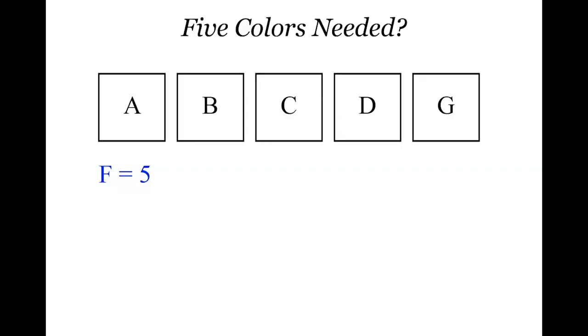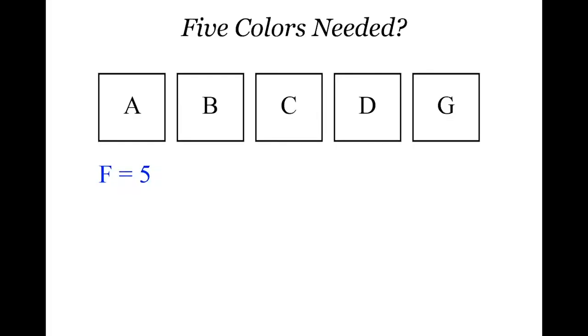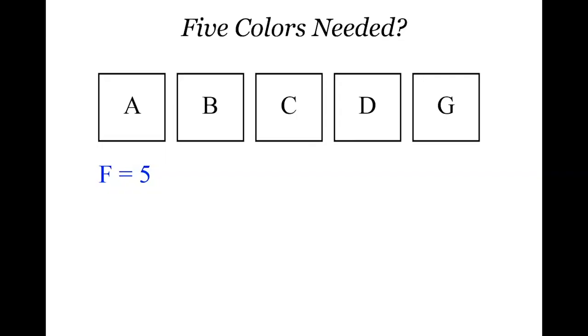I want to look at the vertices and think about how many there could be. We know that at each vertex you need to have at least three different faces. The total number of vertices across all five quadrilaterals is four times five, giving 20 vertices. If we put them together in the smallest possible packets of three, we can get at most six vertices — there aren't enough left for a seventh. So the number of vertices in our map is six or fewer: V is less than or equal to 6.